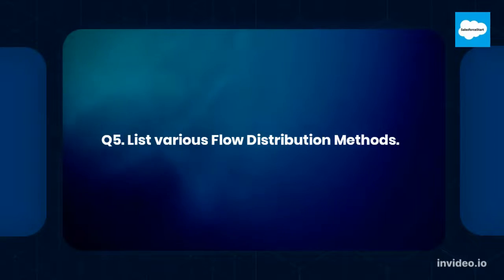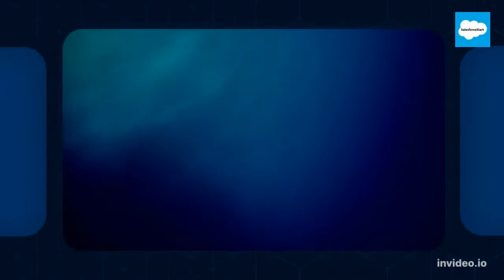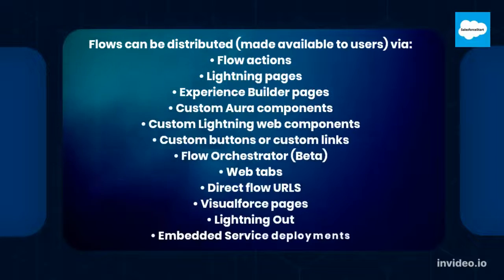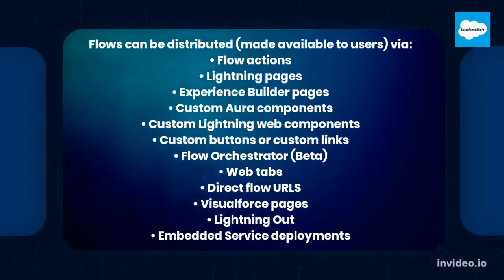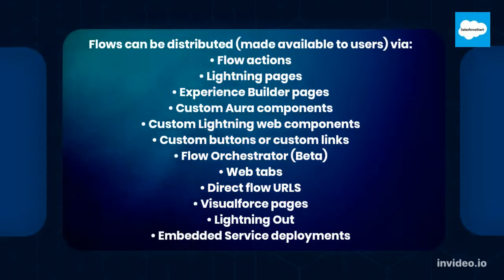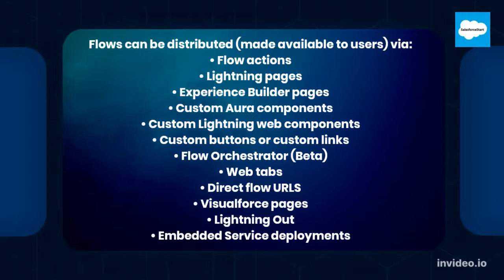Question number five: List various flow distribution methods. Flows can be distributed and made available to users via Flow Actions, Lightning Pages, Experience Builder Pages, custom Aura components, custom Lightning Web Components, custom buttons or custom links, Flow Orchestrator (beta), web tabs, direct flow URLs, Visualforce Pages, Lightning Out, and Embedded Service Deployments.